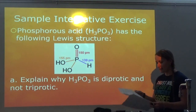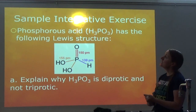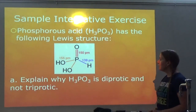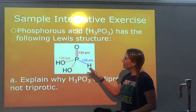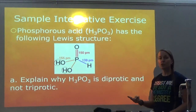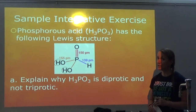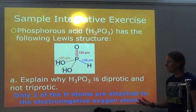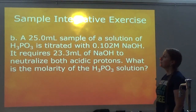Let's knock out this sample integrative exercise. It says: phosphorus acid, H₃PO₃, has the following Lewis structure. Explain why H₃PO₃ is diprotic and not triprotic. When you look at this, it seems like it should be triprotic, but in the structure there are only two hydrogens bonded to the super electronegative oxygen. There needs to be a large electronegativity difference for the hydrogen to be released in water. The third hydrogen is bonded to the P, which is not as electronegative, so it is not going to be an acidic hydrogen. Only two of the H atoms are attached to the electronegative oxygen atom.